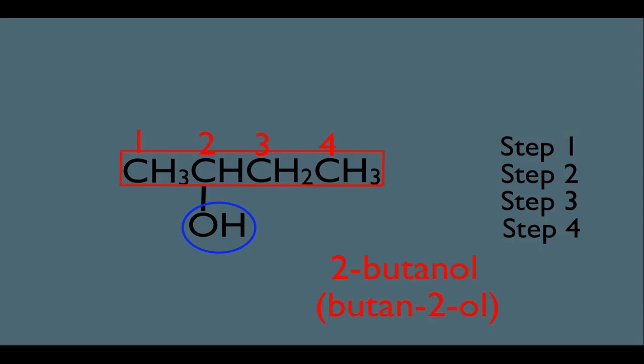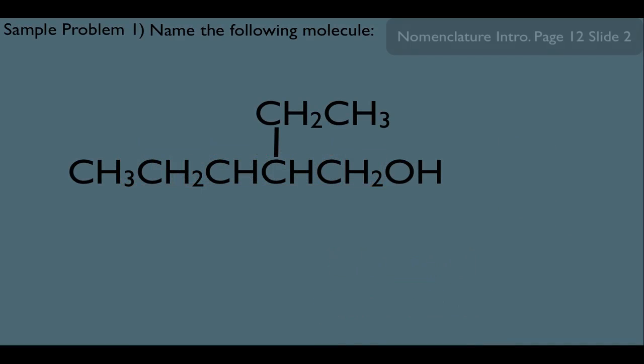Now that we got this, let's look at some sample problems here. What's the name of this molecule? Now watch what happens here. In step one, technically the longest chain in this molecule is this right here. If you count, you'll see that you have six carbons in this box.